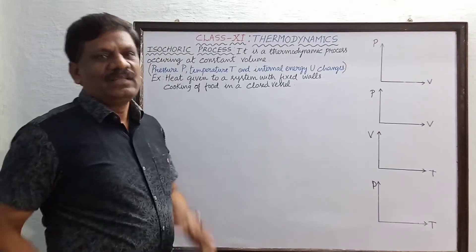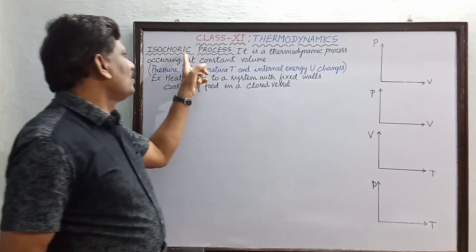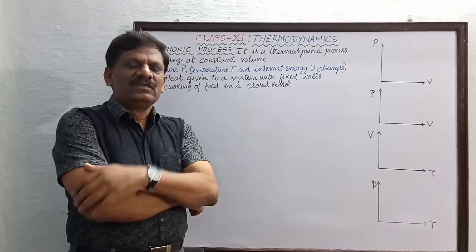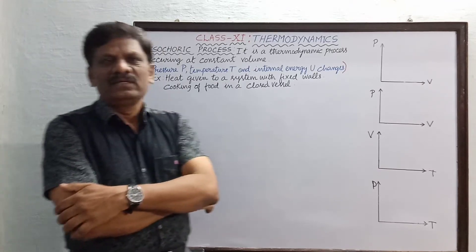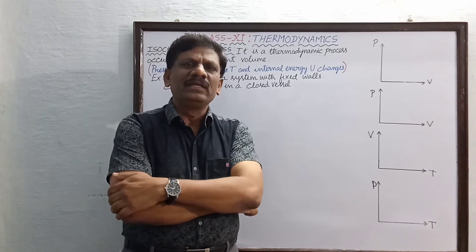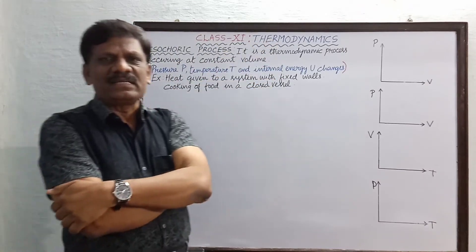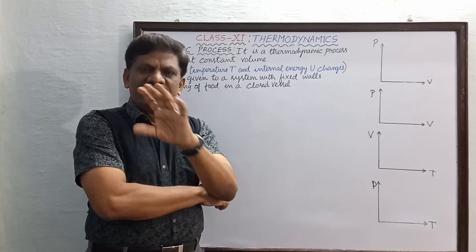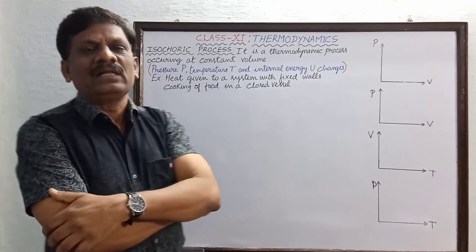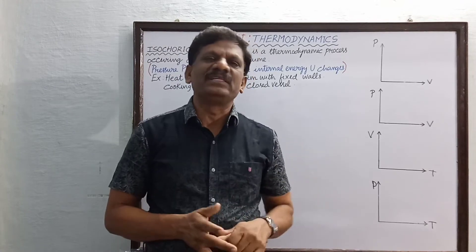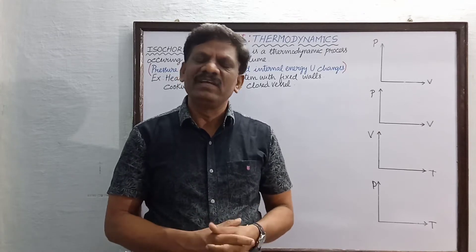We are going to explain one of the thermodynamic processes, namely the isochoric process. We have already studied the isobaric process; the isochoric process is similar. It is a thermodynamic process which occurs at constant volume, while the other thermodynamic variables — temperature, pressure, and internal energy — will be changing.